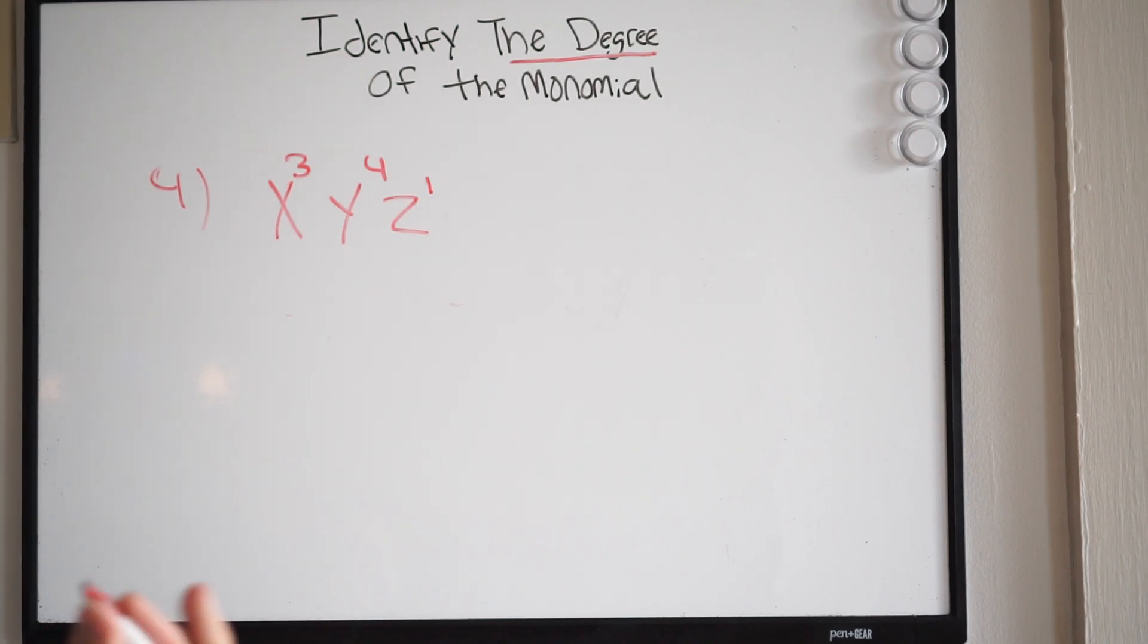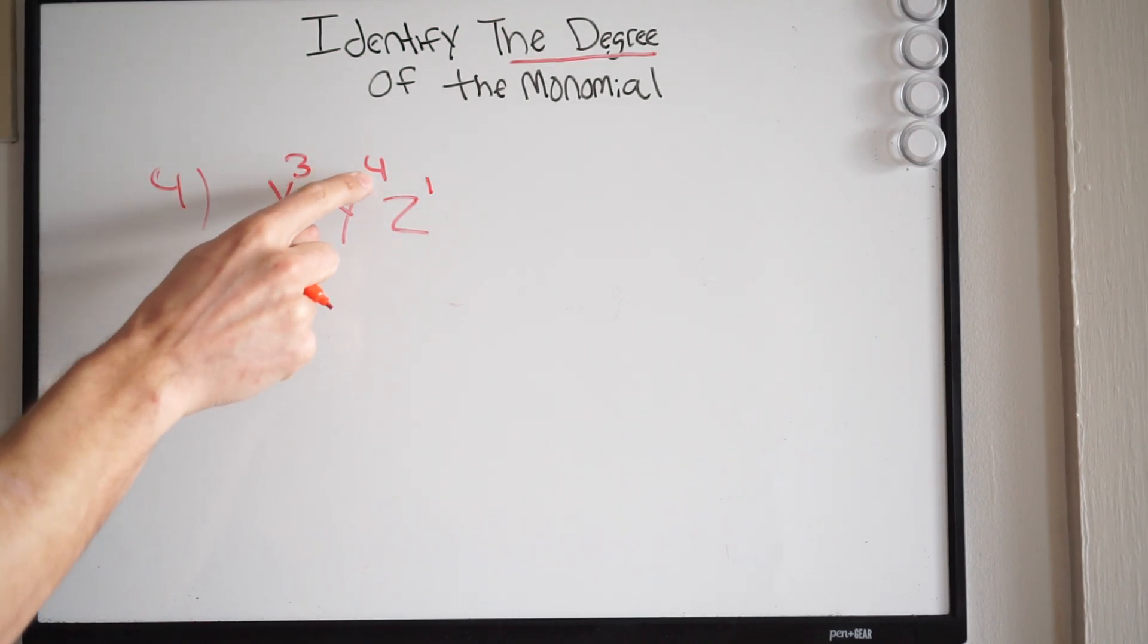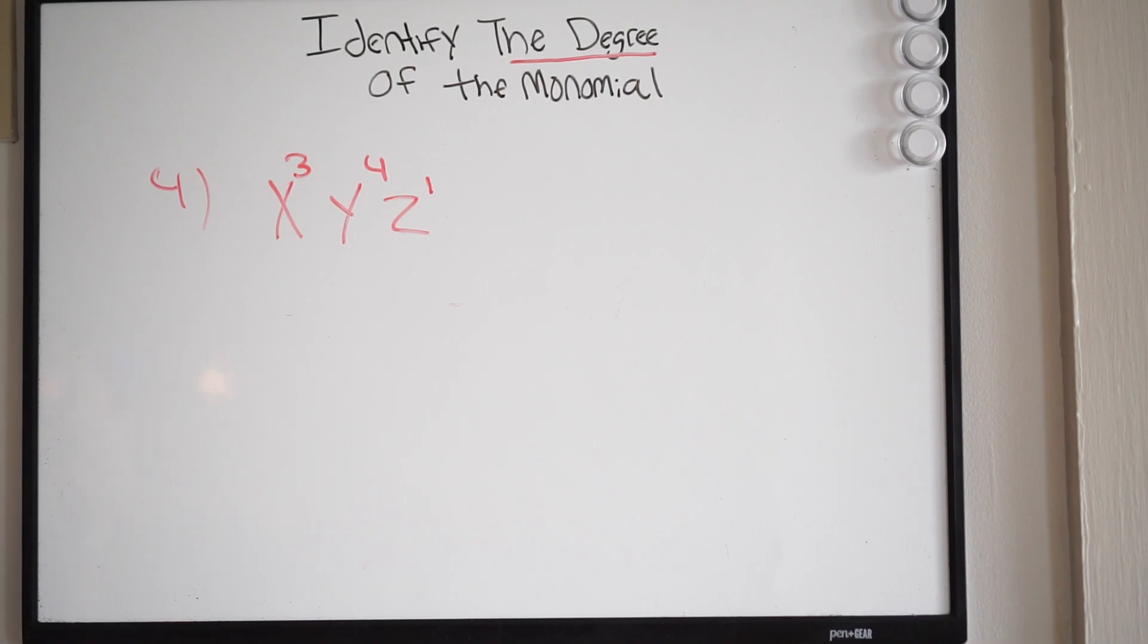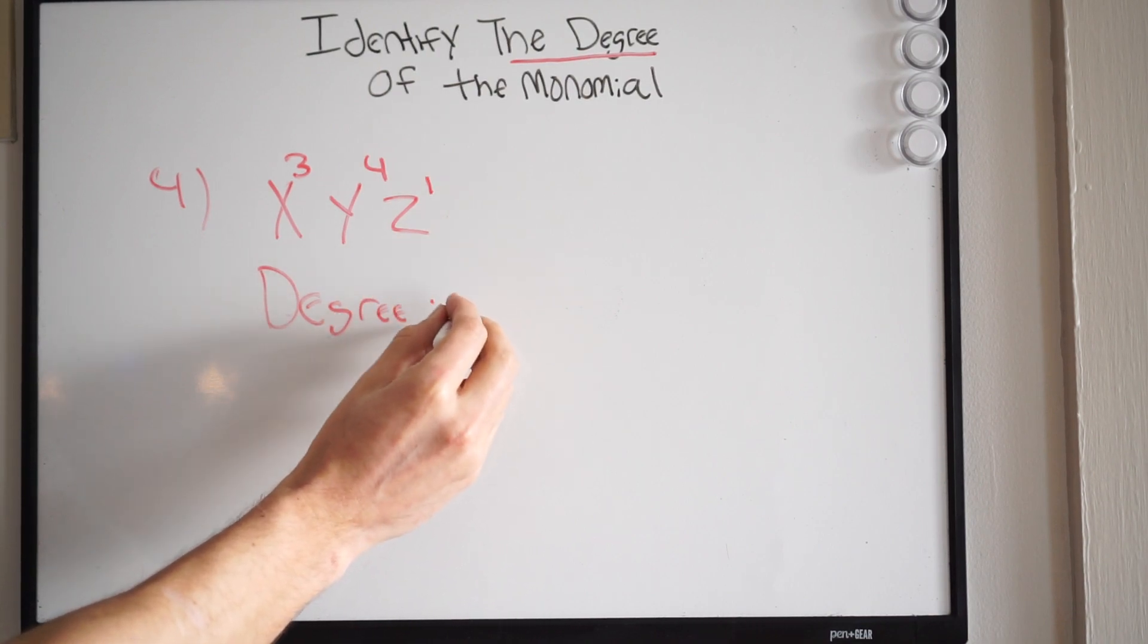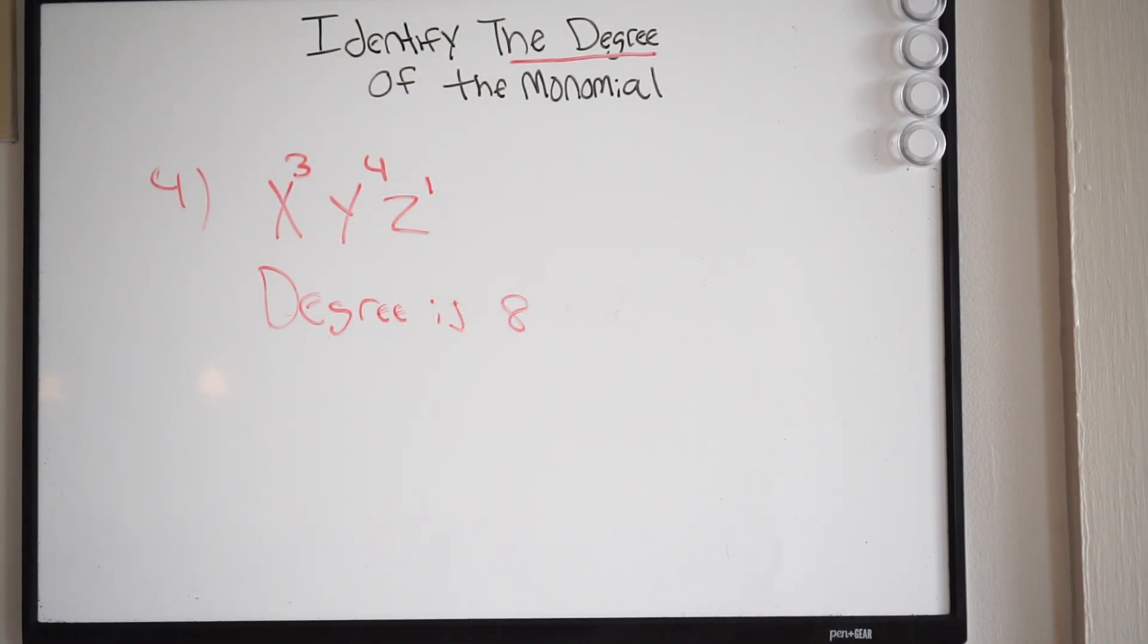So again, all you have to do is add these. So 3 plus 4 is 7, plus 1. This monomial is going to have a degree of 8. Okay, so the degree is 8. Alright, so that's how you identify the degrees of a monomial.